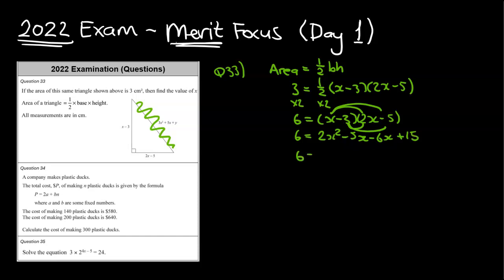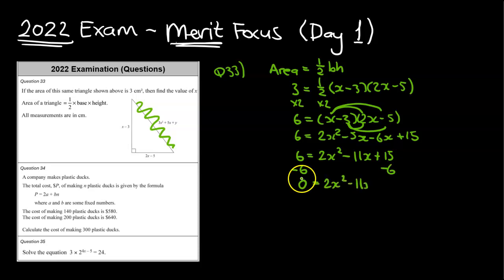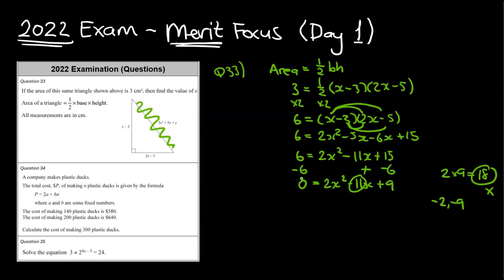So we've got 6 is equal to 2x squared minus 11x plus 15. I'm now going to make this equal to 0 because I can't really factorize my quadratic until it's equal to 0. So we've got minus 6 on both sides. That becomes 0 is equal to 2x squared minus 11x plus 9. I can now think about the grouping method because it doesn't look like there's any common factors. So 2 times 9 is equal to 18. We now need to know what multiplies to 18 but adds to negative 11. And hopefully you're thinking negative 2 and negative 9 — they add to negative 11 and multiply to 18.